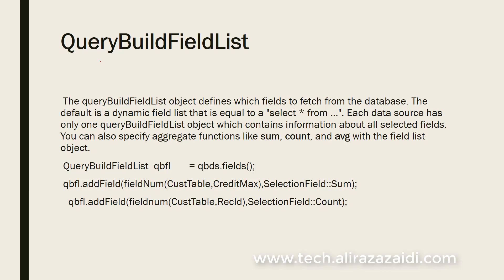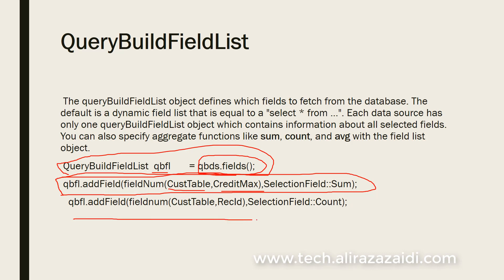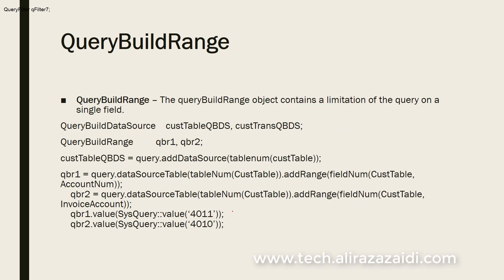In cases where we require aggregate functions such as COUNT or AVERAGE, we must define QueryBuildField and add them at runtime to data sources. If you see the code snippet, we define a QueryBuildFieldList object and assign it to data source fields. Then we add a MAX aggregate field on the customer table for max credit, and a second aggregated field COUNT based on customer RecId.